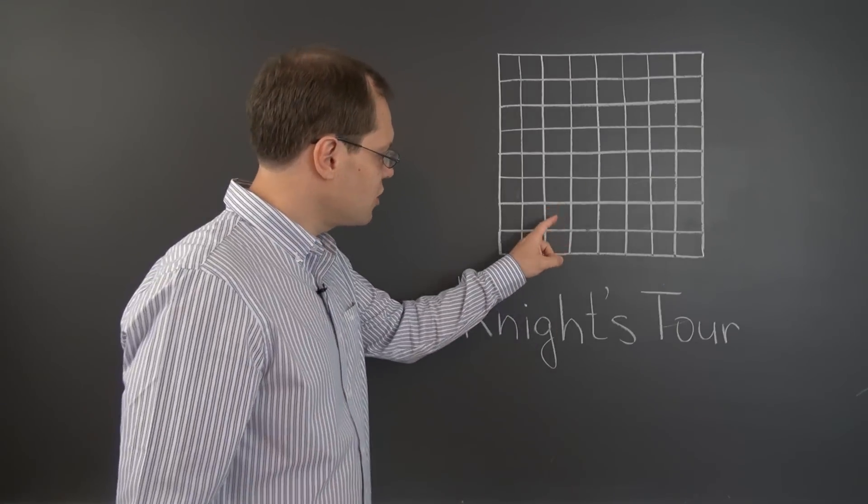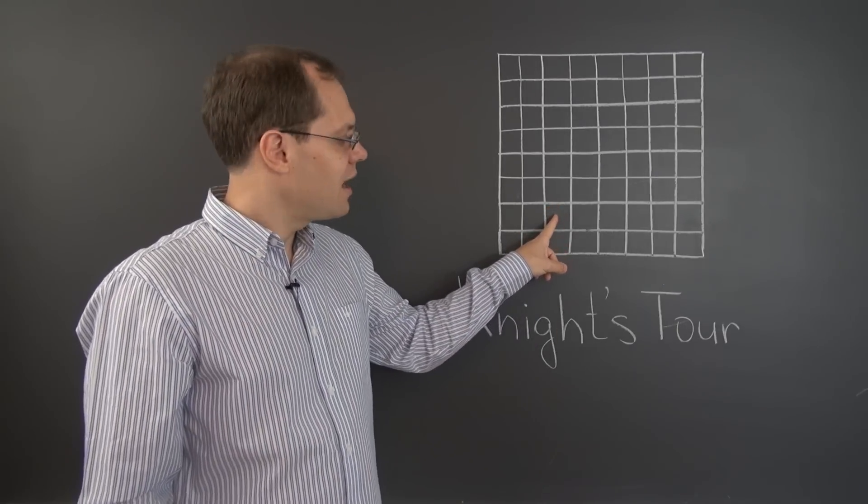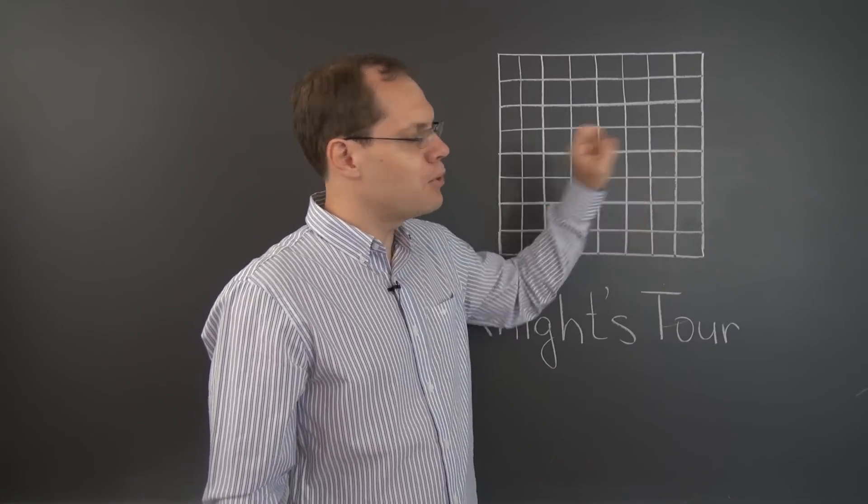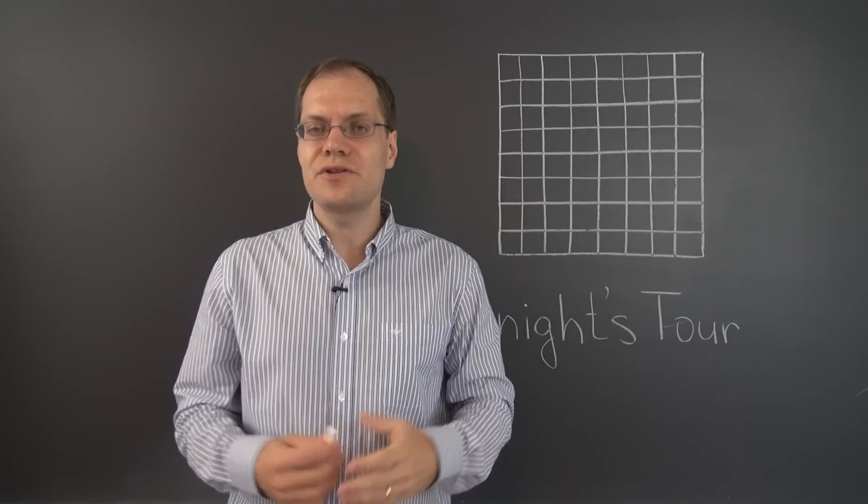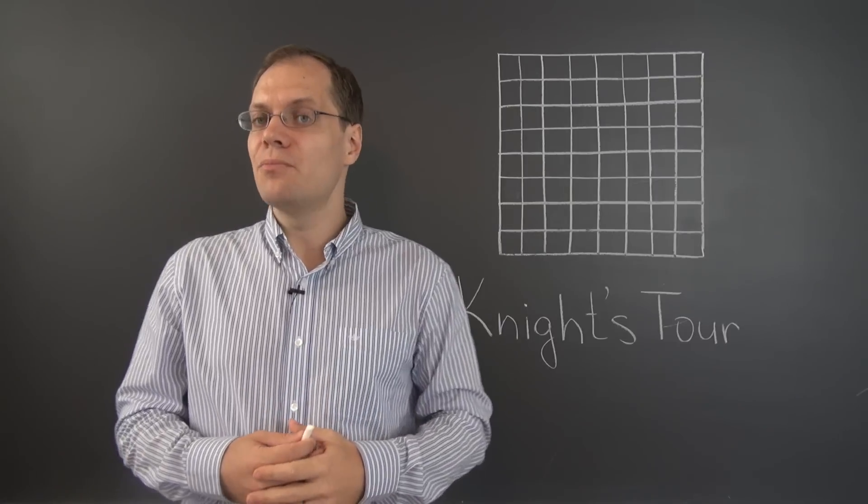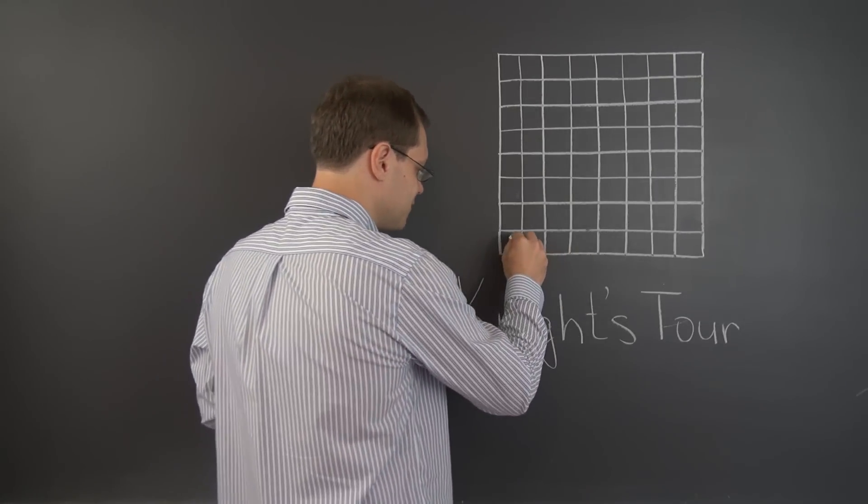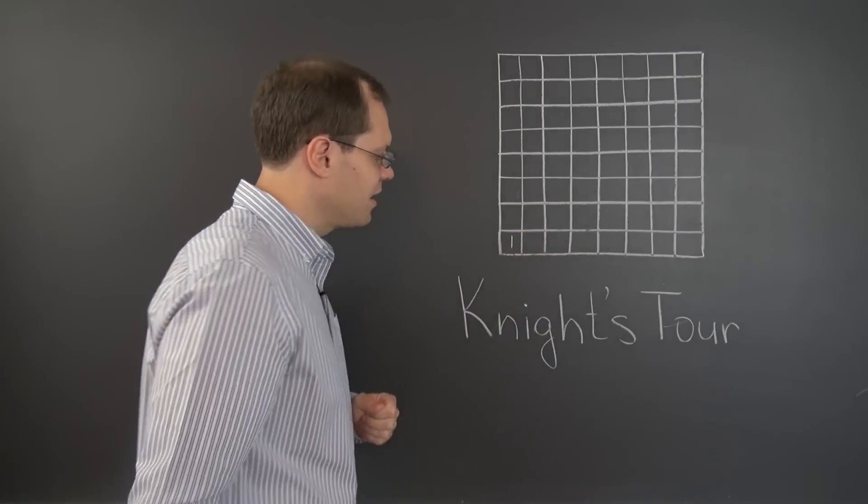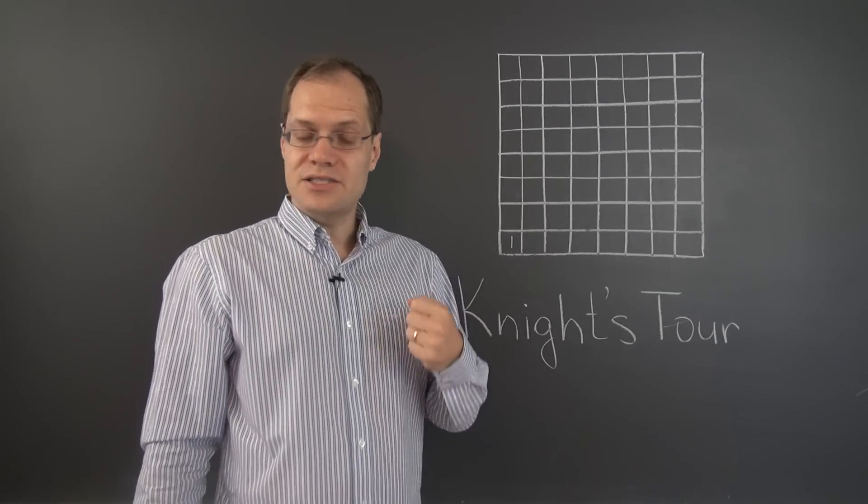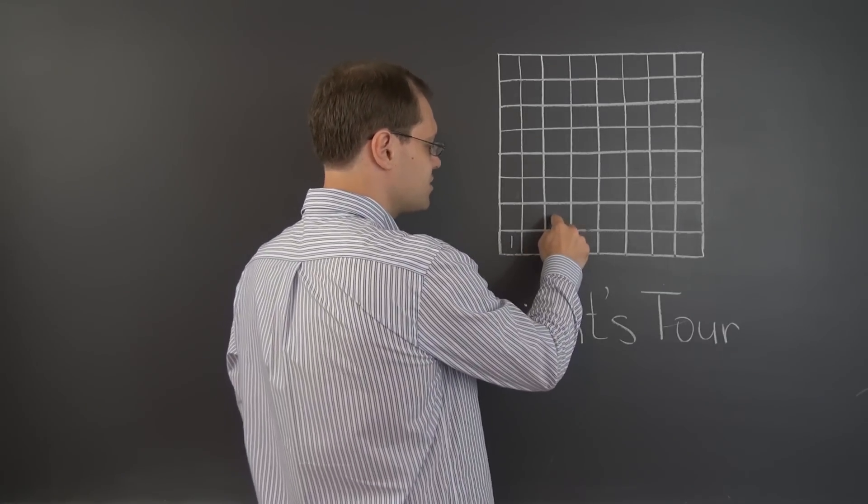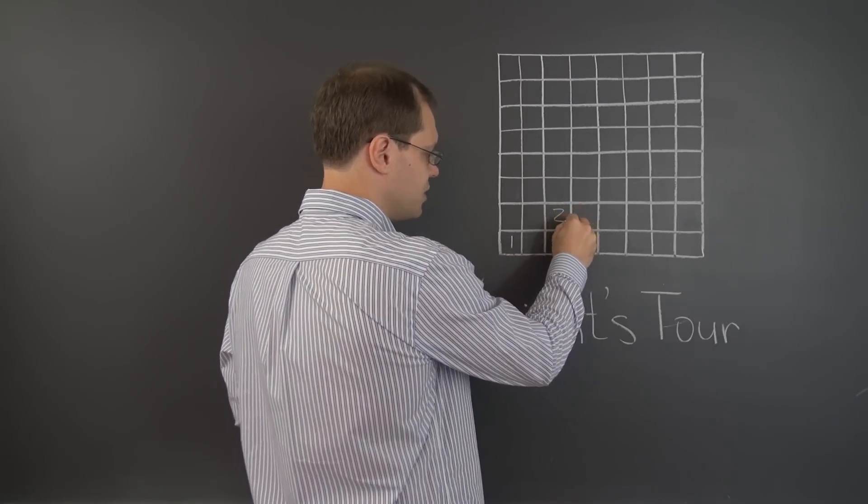The challenge is to start on some square and then to traverse the board with a knight so that you don't visit any square more than once. For example, you might start on the bottom left corner, so let me put a 1 here, and then jump as a knight would to this square right here, so let me put a 2 here.